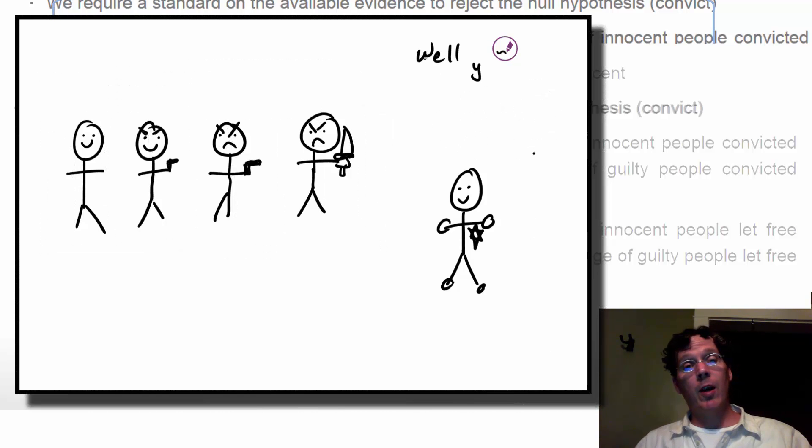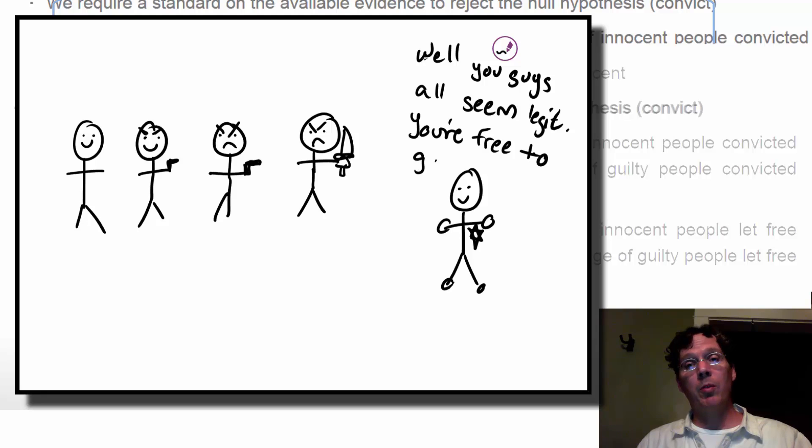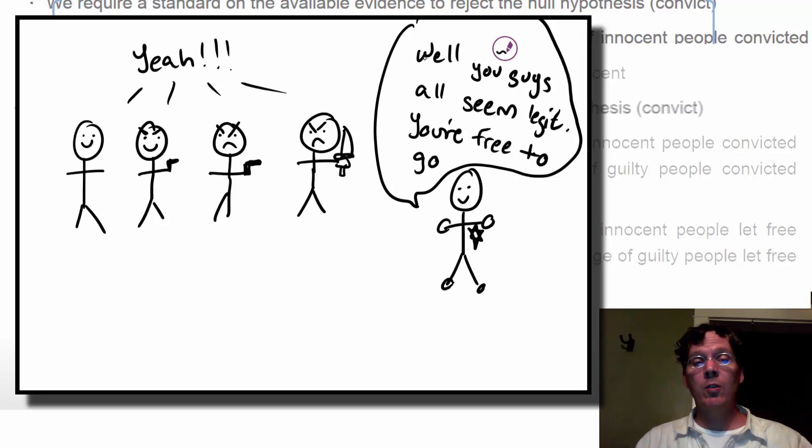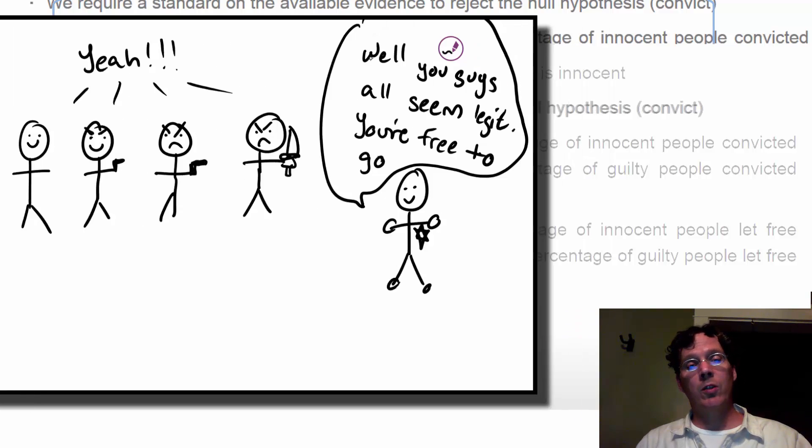If we set a very high standard—basically a person has to have a smoking gun in their hand to convict them—then we would increase the percentage of innocent people let free (a good thing, correctly accepting the null). But we would also increase the percentage of guilty people let free, so-called Type II errors.